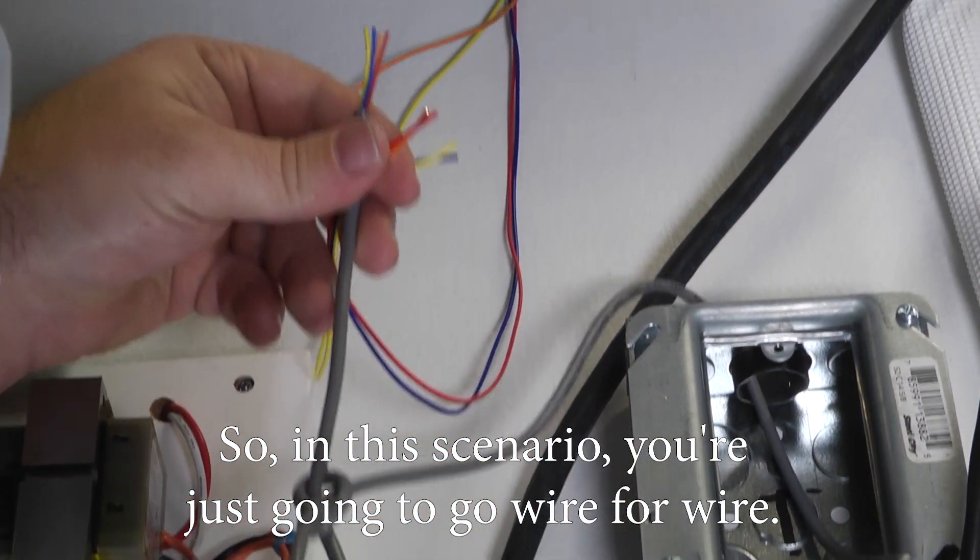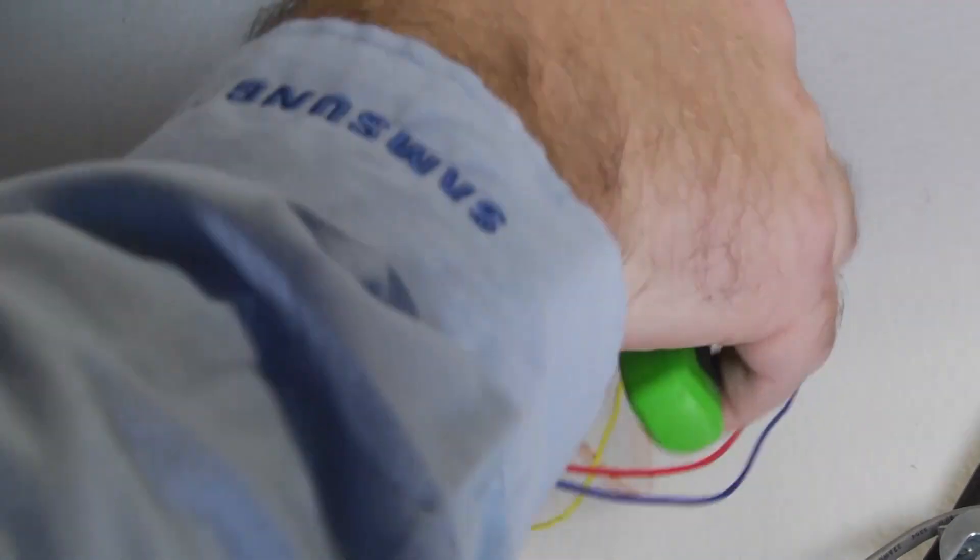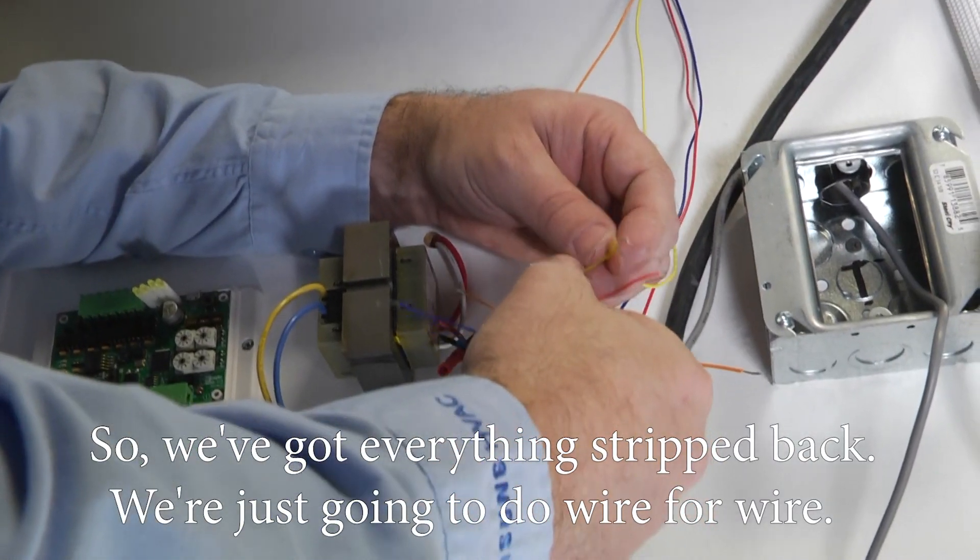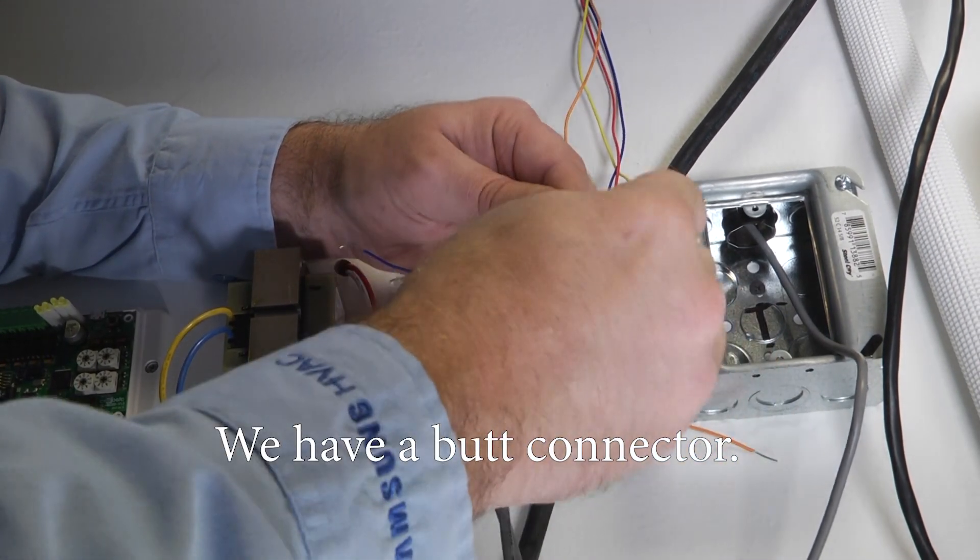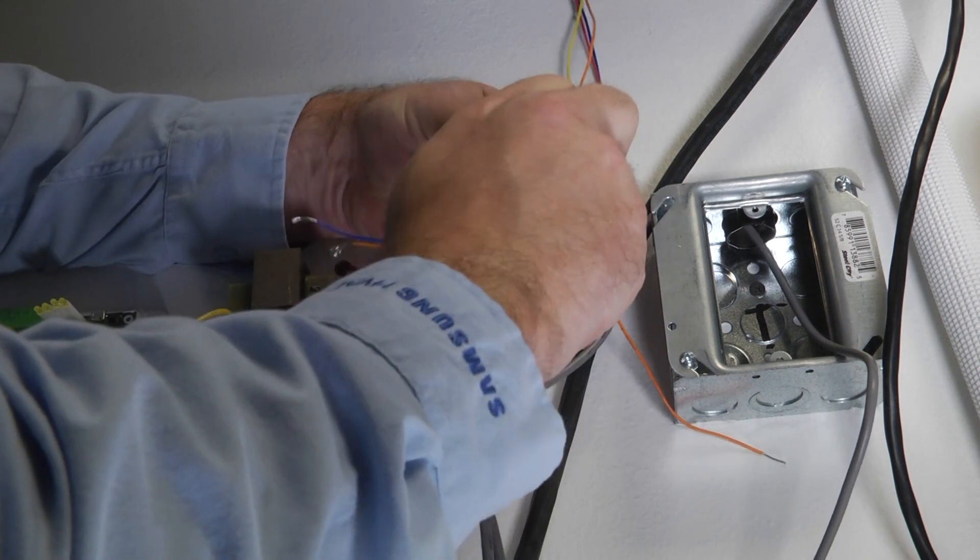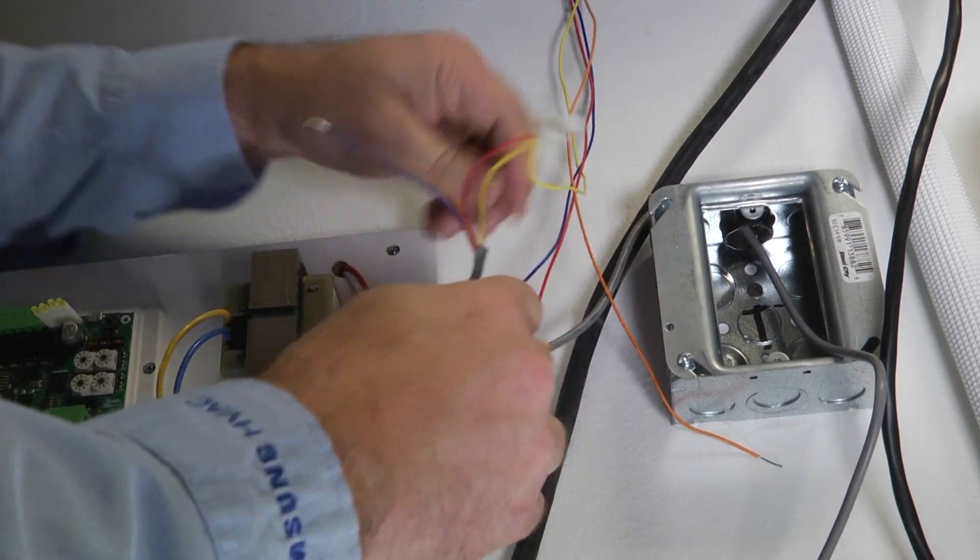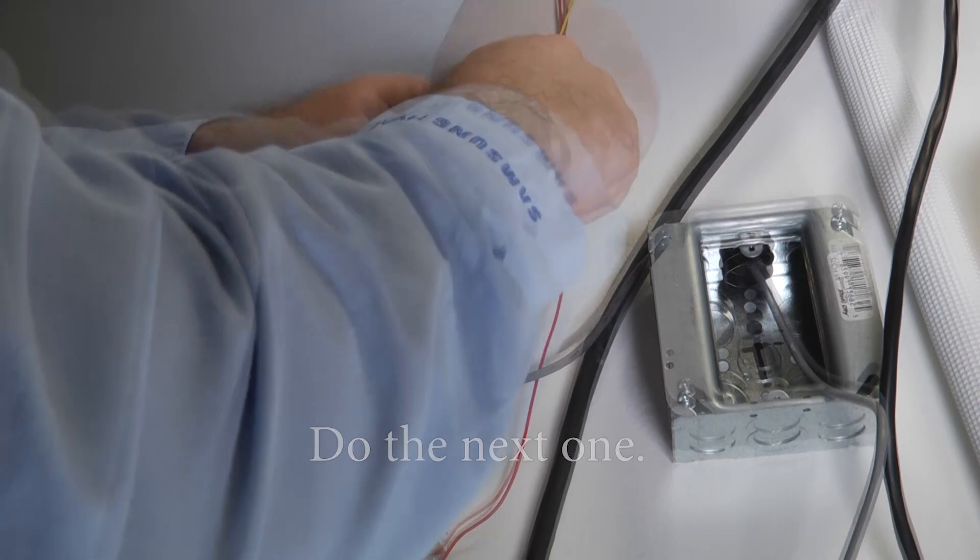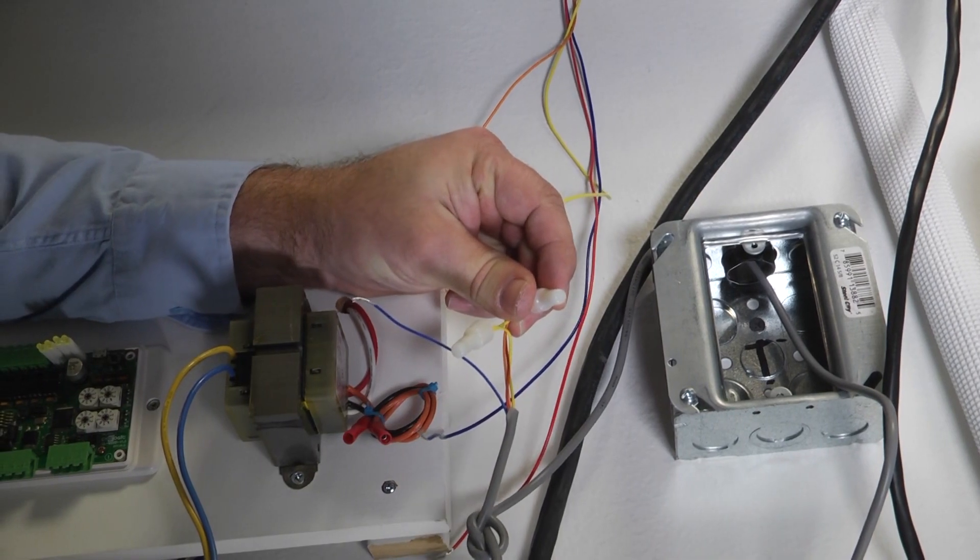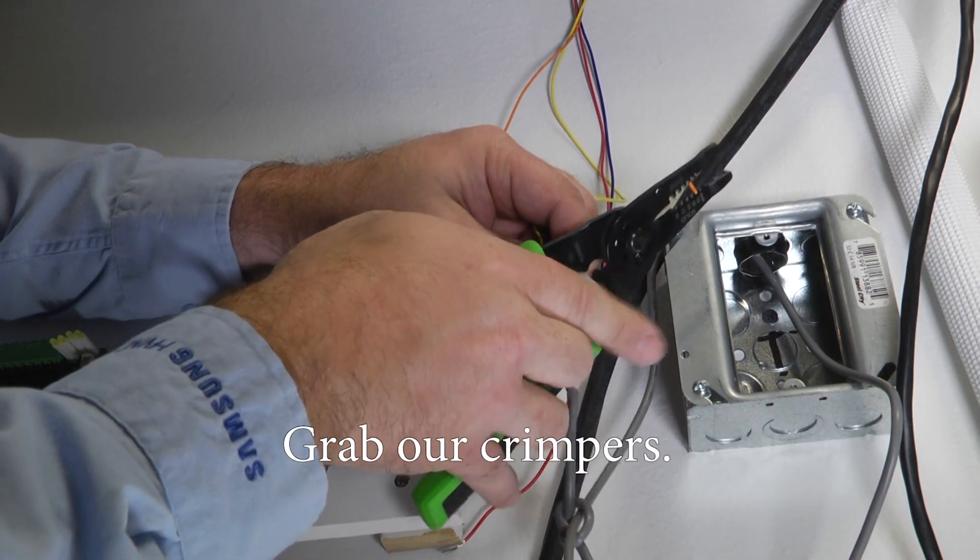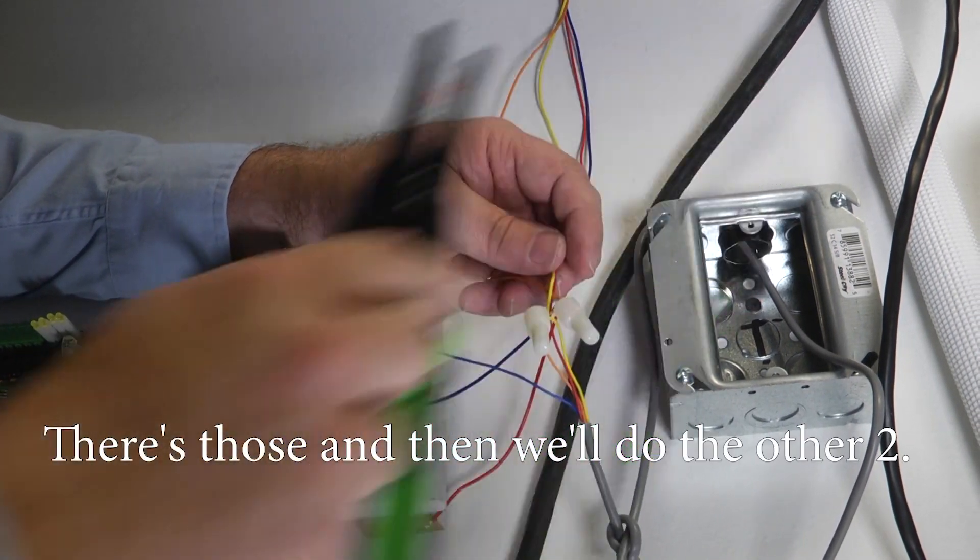So in this scenario you're just going to go wire for wire. All right so we got everything stripped back, we're just going to do wire for wire. We have a butt connector. Just going to put it on there. Make sure it's secure. Do the next one with our crimpers.